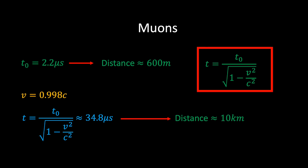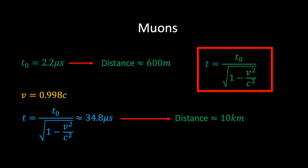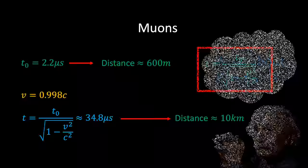So let's assume we accept the validity of the time dilation equation and the notion that time runs slow for moving clocks. Our next task is to understand how this links to Einstein's most famous equation, E equals mc squared.